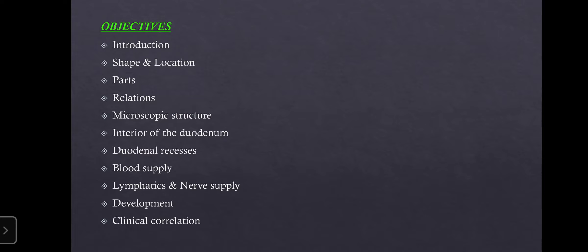Our objectives for today will be: an introduction about the intestine, shape and location of the duodenum, the parts, relations, microscopic structure, interior of the duodenum, duodenal recesses, blood supply including arterial supply and venous drainage, lymphatics and nerve supply, development, and finally a few clinical correlations.